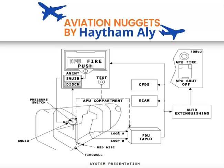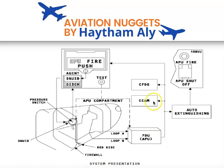The APU compartment is protected by Loop A and Loop B, which give a signal to the Fire Detection Unit of the APU. The Fire Detection Unit then sends signals to the ECAM, the CFDS, the fire panel, and the APU fire indication.